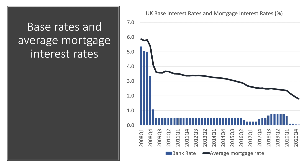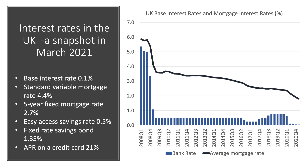I've added to this chart the average mortgage interest rate — the average rate on a home loan. There's been a deep cut at the time of the global financial crisis and a steady but persistent downward trend in mortgage rates over the same period. Looking at a snapshot of key interest rates in March 2021: the base rate is 0.1%, the standard variable mortgage rate is just over 4%, but you can fix your mortgage rate at 2.7% for five years. Easy access savings rates are less than 1%, and even fixed rate savings bonds only get you 1.35% on average.